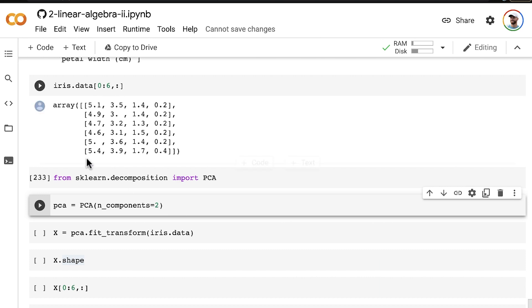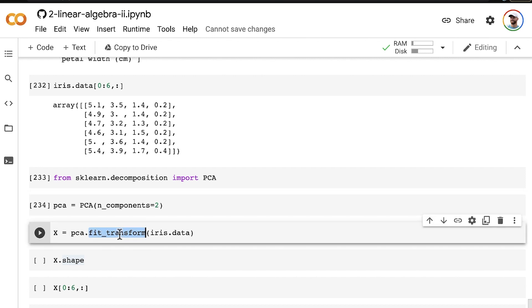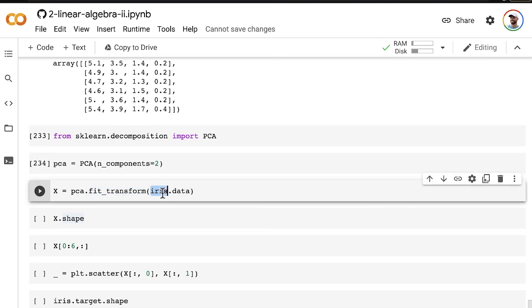that account for the most structure amongst all of the features in the data set. So in order to actually fit our PCA model, we use the fit transform method and pass in our data.